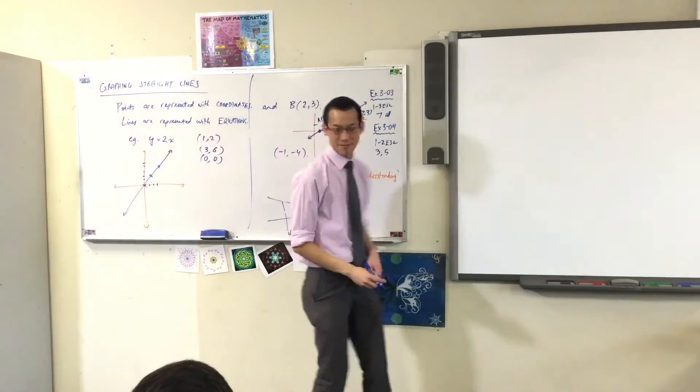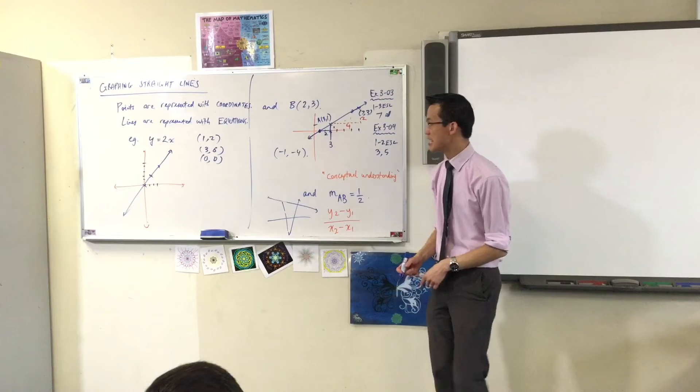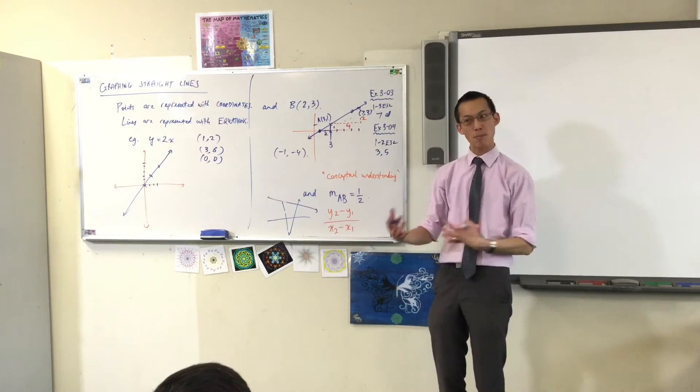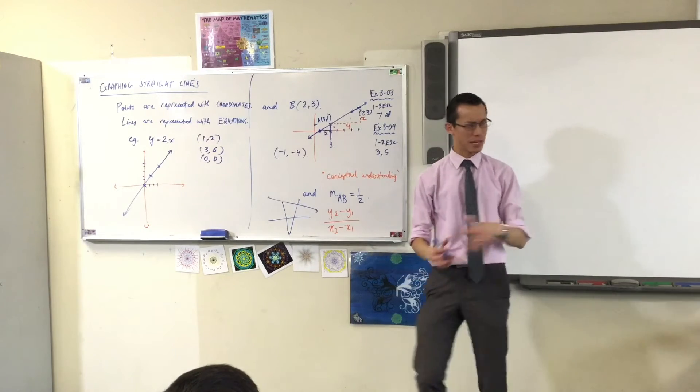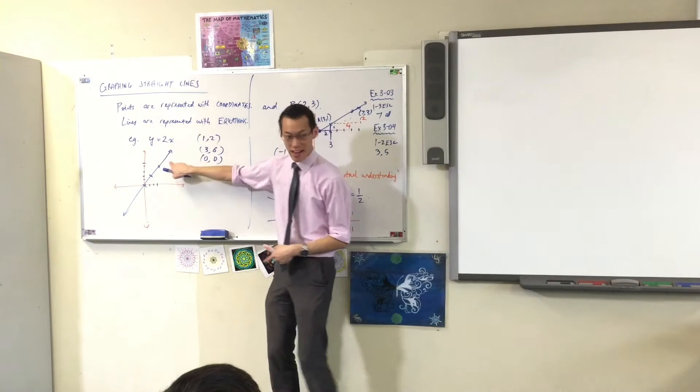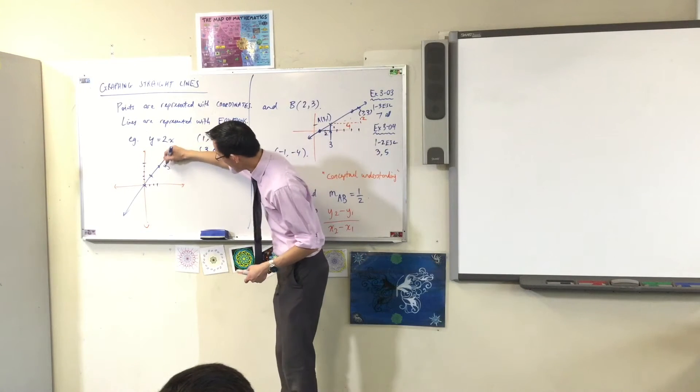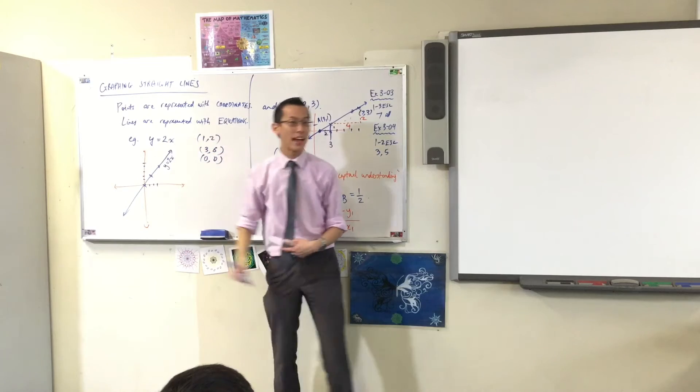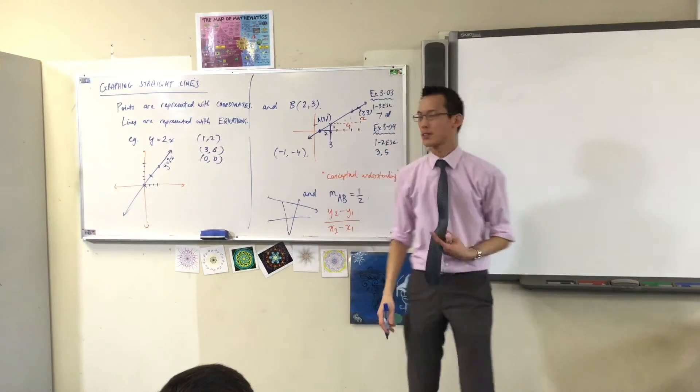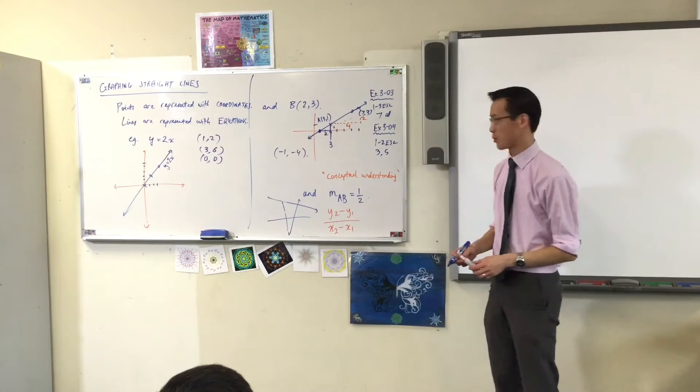So, this line represents the equation and the equation represents the line. They're kind of like two sides of the same coin. Because this line is this equation, I actually label it as such. I say, that line is Y equals 2X, or the equation of that line is Y equals 2X, okay?